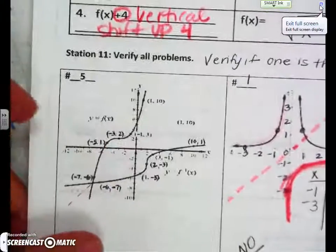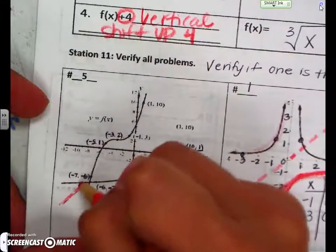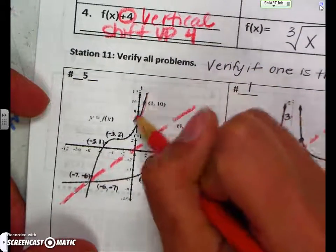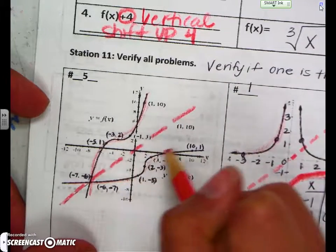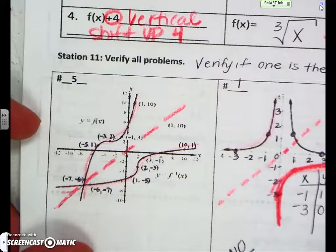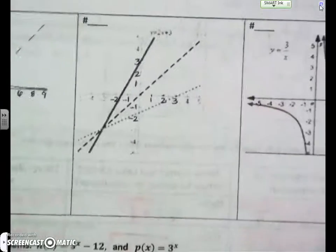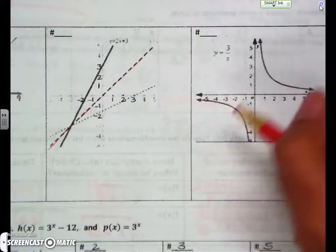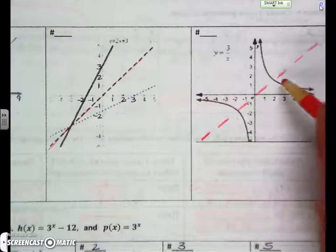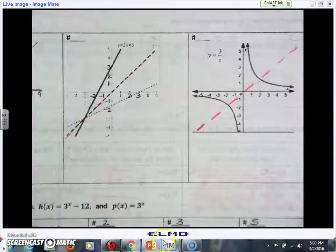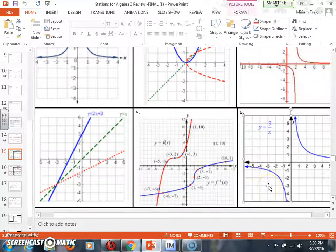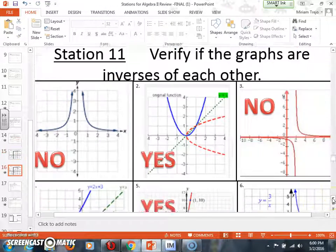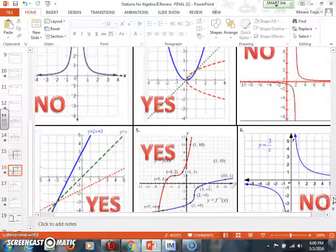The correct answer for number five is yes. If I were to draw a dashed line down the center of this, this side looks just like the other side if I were to fold the paper in half. Let's go to the last question. Number, I guess six and seven. You can tell here that it is. And then the last one, do they look the same on the top and the bottom? The correct answer is no.